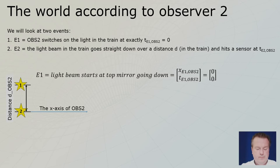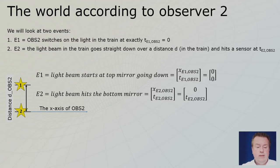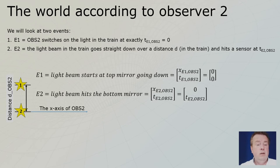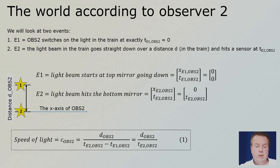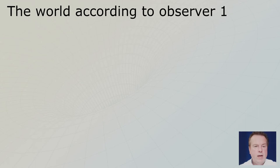Sometime later, the light hits the floor. Because observer two has no reference points around her, she will say her x is still zero — nothing moved. The light moved in the y-direction, but nothing moved in the x-direction. So the x-coordinate of the second event for her is zero as well, but the time will be sometime later. She then calculates the speed of light: distance traveled divided by the time it took. That gives us equation one: c through the eyes of observer two equals D divided by the time of event two through observer two's eyes.